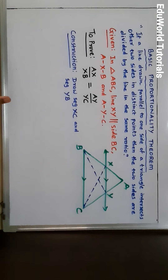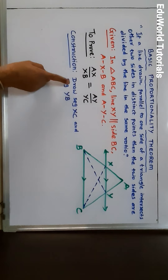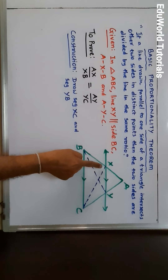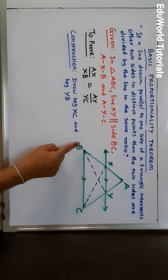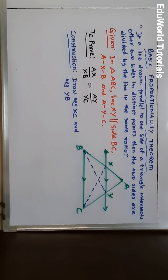For the proof, construction is needed. The construction is: draw seg XC and seg YB. You can see I have made the construction with dotted lines. Now we shall go for the proof. For the proof, we will need the property of areas of two triangles which we have already proved earlier.